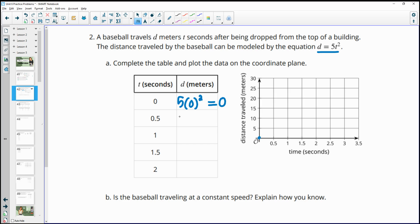If we plug in 0.5, we have 5 times 0.5 squared, which will give us 1.25. So at 0.5, we're at 1.25. Plug in 1. So 5 times 1 squared is 5. At 1, we're at 5. Then 5 times 1.5 squared gives us 11.25. And then 5 times 2 squared gives us 20. So at 2, we're at 20.